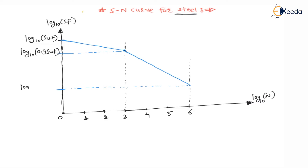The fatigue strength at 10⁶ revolutions is the endurance strength, corresponding to log₁₀(SUT) — where SUT is the ultimate strength, i.e., the stress value at the ultimate point.